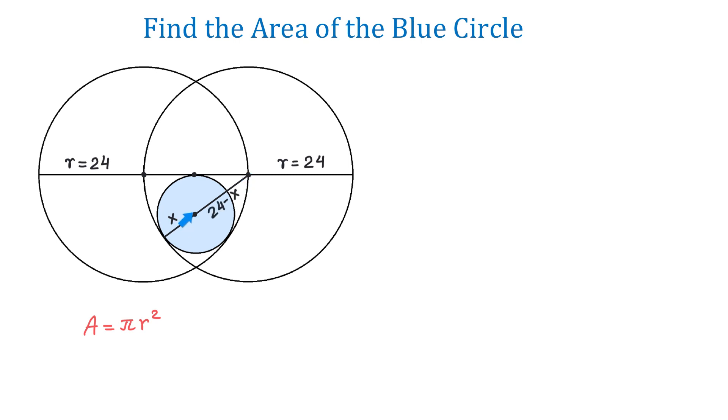Now, from the center of the blue circle, we will draw a perpendicular up to this tangent line to form a right triangle. Then, this side of the triangle is x, because this is the radius of the blue circle.